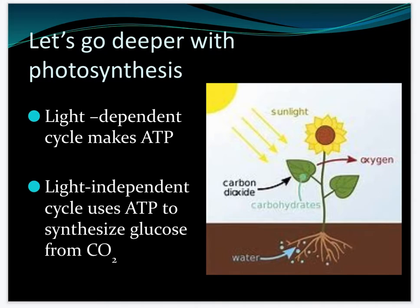In photosynthesis there's the light-dependent cycle, which happens in the light, and then there's the light-independent cycle — sometimes called the dark cycle — which happens without light and uses ATP to synthesize sugar from CO2. When plants go through photosynthesis they provide animals with glucose and oxygen, and the oxygen produced actually comes from the H2O — the water is split off.